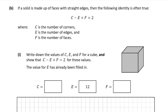Now let's look at part B. We're told that the following identity is often true when a solid is made up of faces with straight edges: C minus E plus F equals 2, where C is the number of corners, E is the number of edges, and F is the number of faces. Part B1 wants us to write down the values of C, E, and F for a cube. E has already been written in, so we need to remember that C minus E plus F should equal 2.